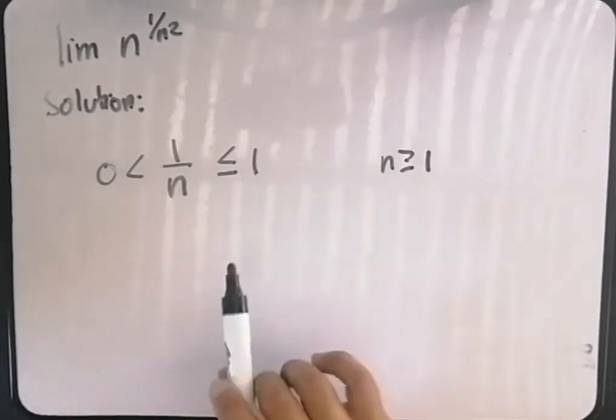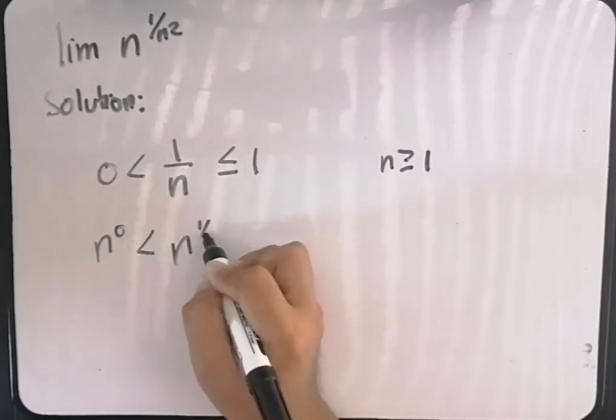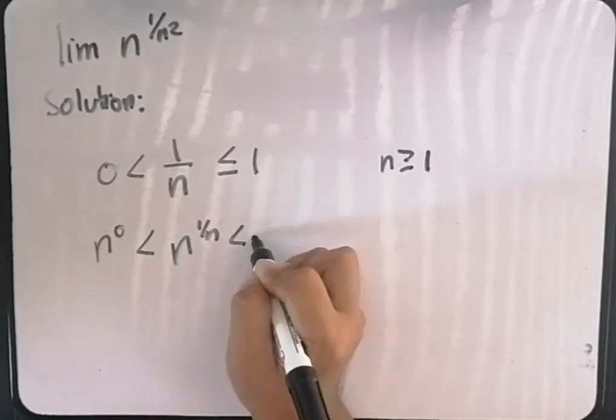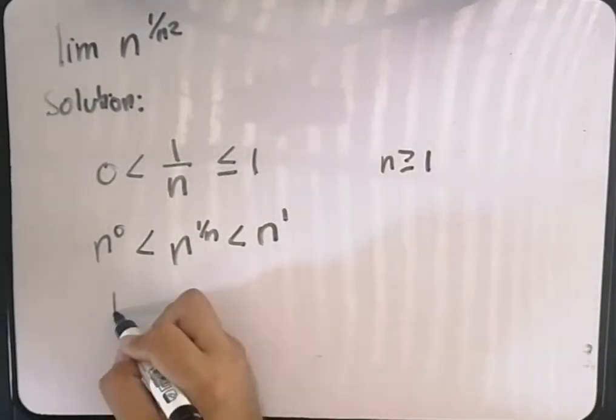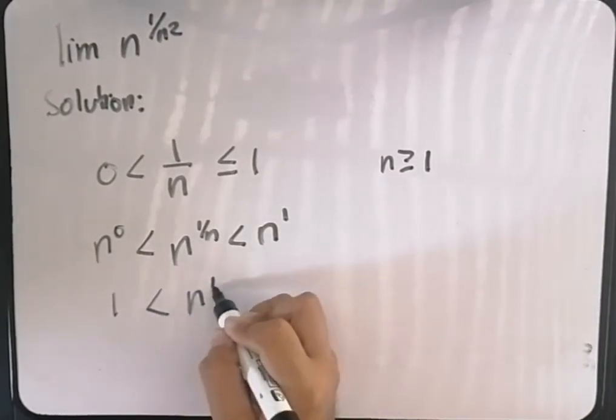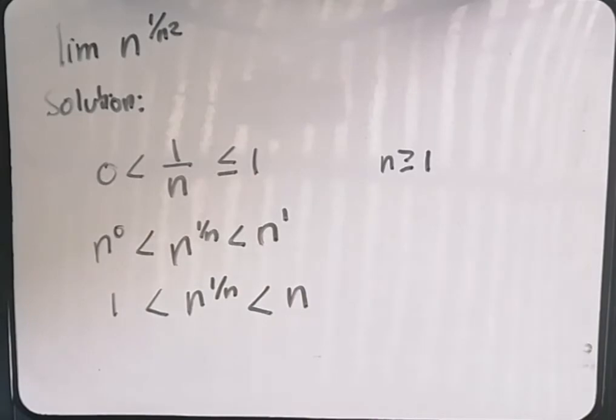Now if we raise everything by n, we now have this inequality. n raised to 0 is just equal to 1 and n raised to 1 is just equal to n.